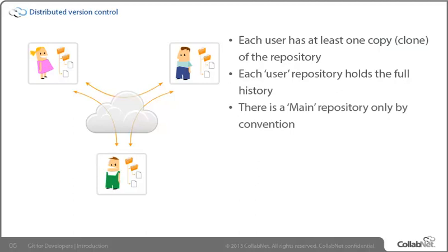Now in enterprises, we do need such a concept — we need one single repository we can go to for formal testing and deployment into various environments, including production. But to have that central or main repository is something we have to impose upon the distributed tool. It is not inherently a part of it. In the general model, each one has their own copies and can share them back and forth, but there is no concept of a single point of truth.